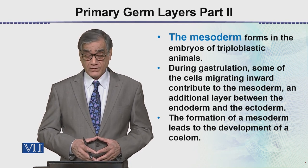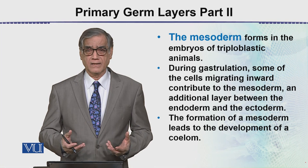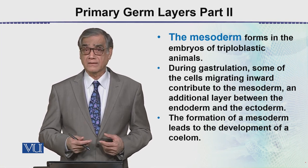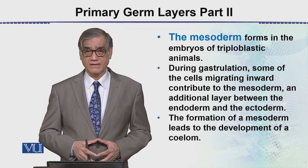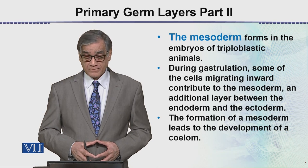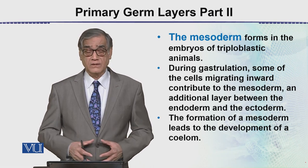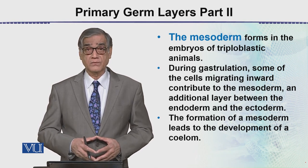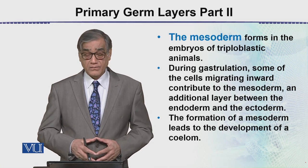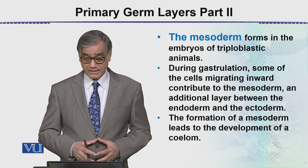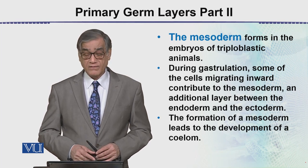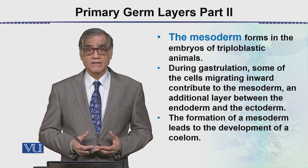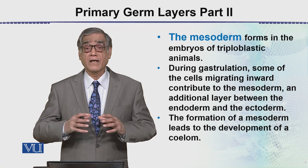The mesoderm forms in the embryo of the triploblastic animal. Diploblastic animals, such as cnidarians, lack a mesoderm — this is why we call them diploblastic animals. In the triploblastic animal, some cells migrate inward and contribute to the mesoderm, an additional layer between the endoderm and the ectoderm. The formation of the mesoderm leads to the development of a coelom, which is a body cavity.